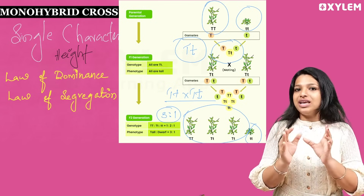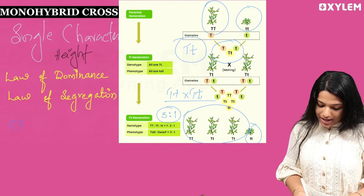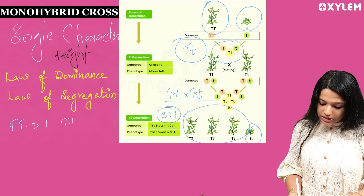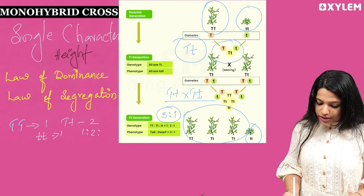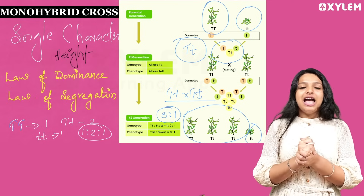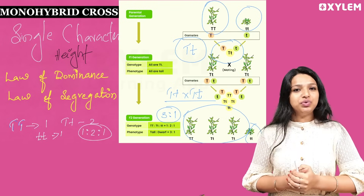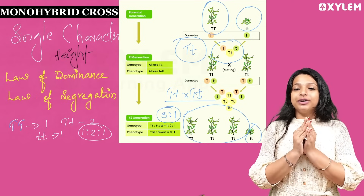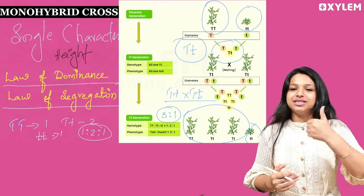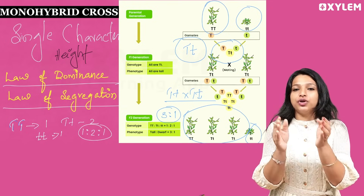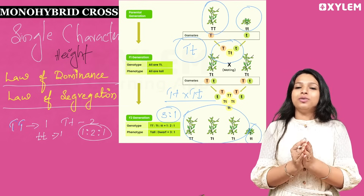For the genotype: capital T capital T is 1, capital T small t is 2, and small t small t is 1, so the genotypic ratio is 1:2:1. The phenotypic ratio is 3:1 and the genotypic ratio is 1:2:1 in a monohybrid cross. From this we derive the law of dominance — the dominant character is expressed — and the law of segregation, where genes segregate during gamete formation.